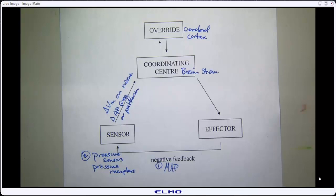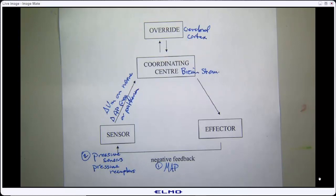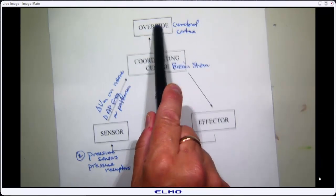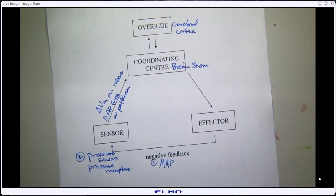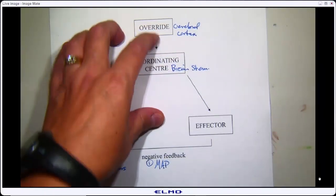We do know that the conscious level — the cerebral cortex — can affect that coordinating center. For example, right before a race in anticipation, your heart rate goes up. You're not racing yet, but exercise has the potential to cause a drop in mean arterial pressure, so in anticipation the body increases heart rate. That anticipatory signal came from the cerebral cortex — the lower brain stem doesn't anticipate anything, it just does what it's told. So there is cross-communication there.